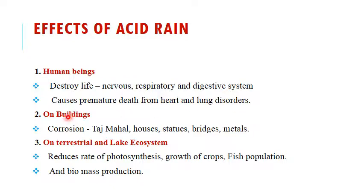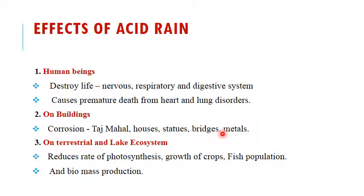The second major effect is on buildings. The main effect of Acid Rain on buildings is that it causes corrosion. The Taj Mahal in Agra is mainly corroded due to the effect of Acid Rain. Not only the Taj Mahal, but many houses, statues, bridges, and metals are also affected by Acid Rain.